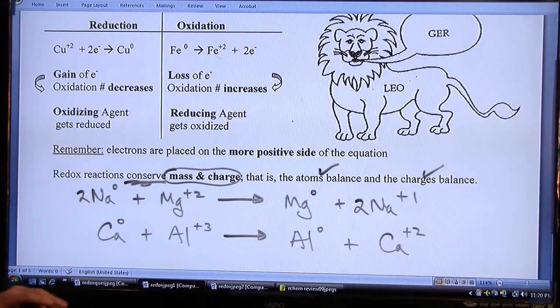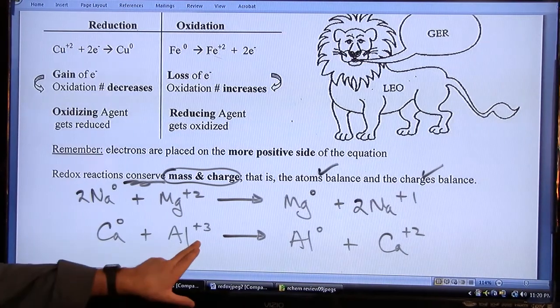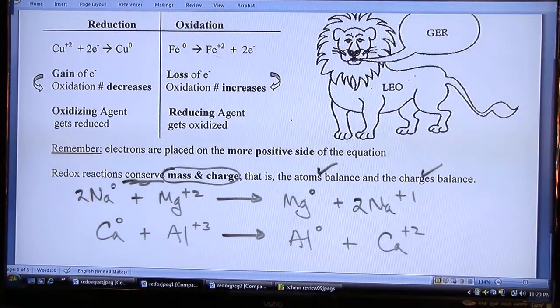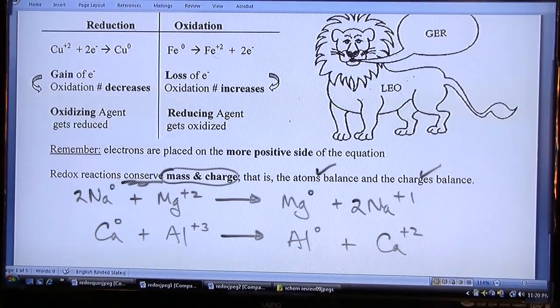So we have a discrepancy, an imbalance here in the charges. Look, plus 3 and plus 2. The only way to remedy that, to balance it, is to change the coefficients of the charged particles.